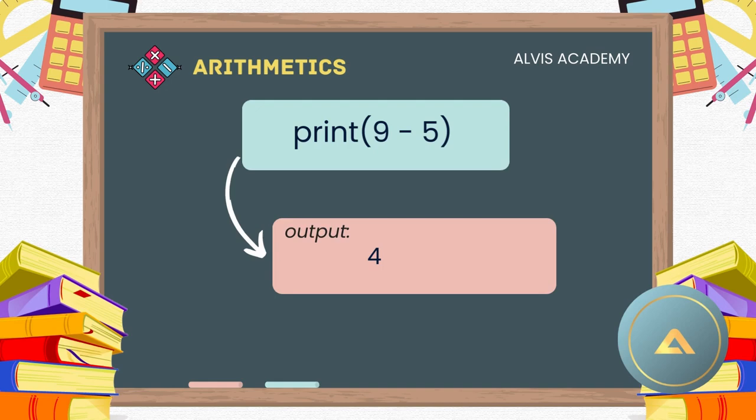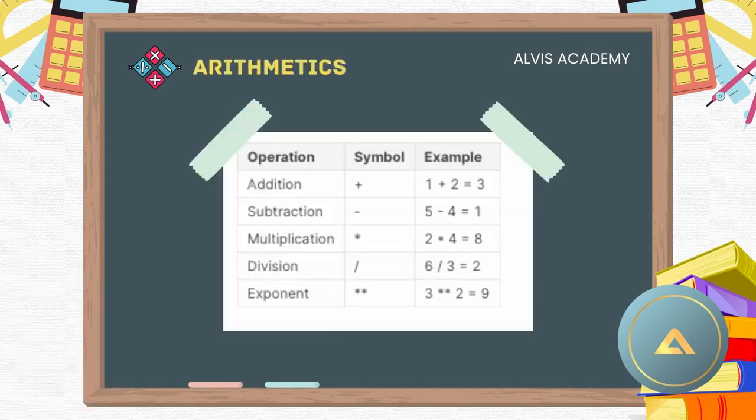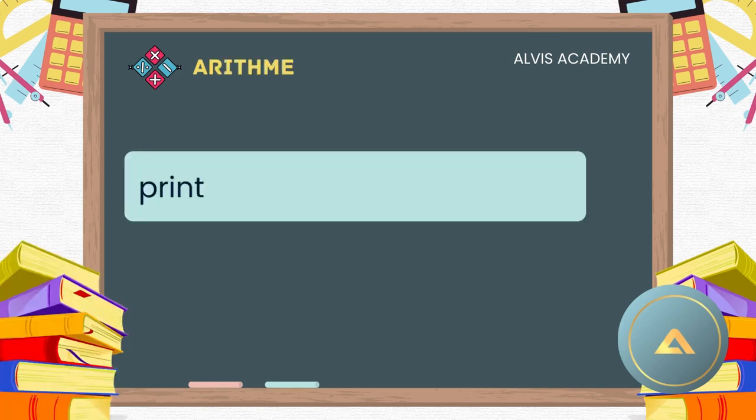Apart from addition and subtraction, you can do so many other operations. For example, we have the table below showing how you can do addition, subtraction, multiplication, division, and exponents. The symbols are shown there in Python programming.